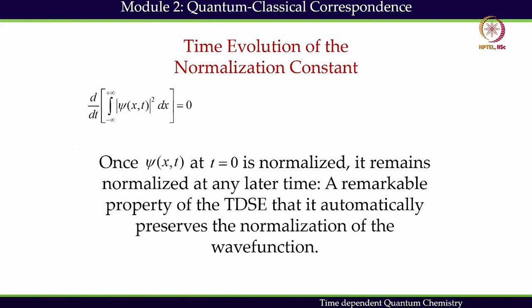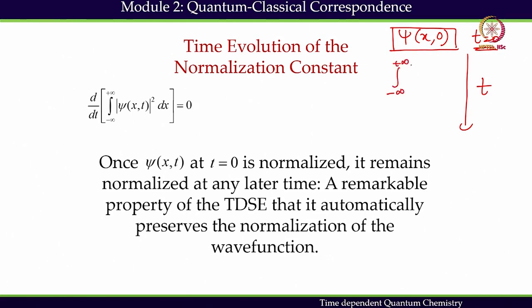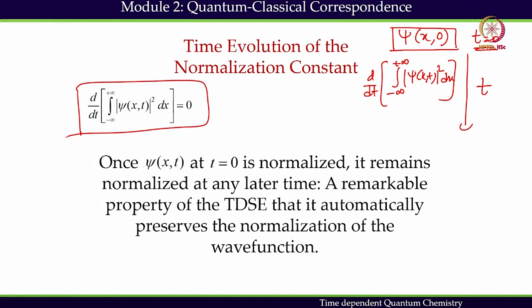Our next concern: I told you that I have been able to normalize this wave function at t equals 0. Then the particle will evolve as a function of t — that is all about dynamics. My question is: what will happen to the total probability of the particle in the entire space? What will happen to this integration if I take the time derivative of it? It has to be 0 to preserve the normalization constant, or to preserve the global probability.